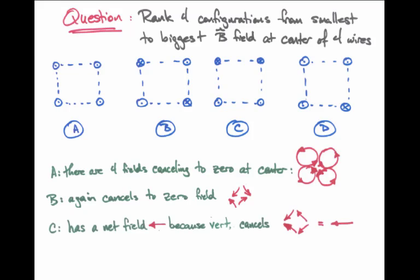In case C, the magnetic field has a net component that points exactly to the left, because the vertical components cancel. If we examine the four individual fields from the four individual wires, we notice that the upper two wires cancel each other's vertical component, and the lower two wires cancel each other's vertical component. But in all cases, those four arrows point somewhat to the left.